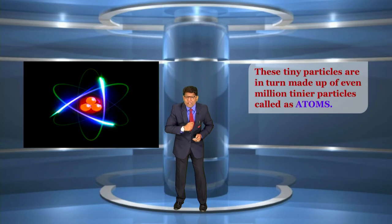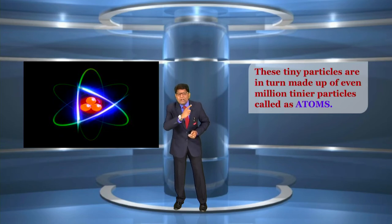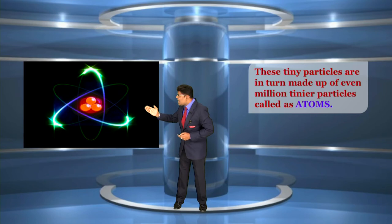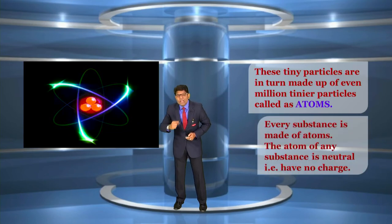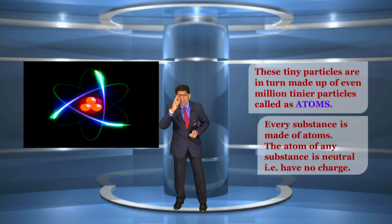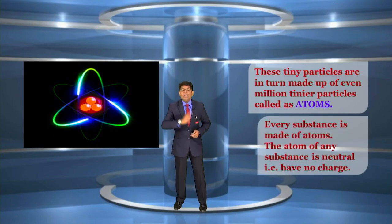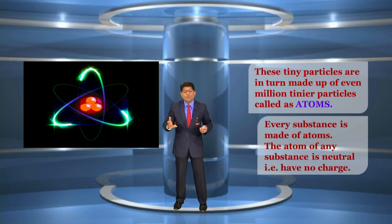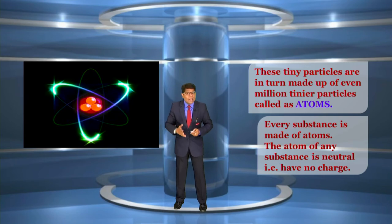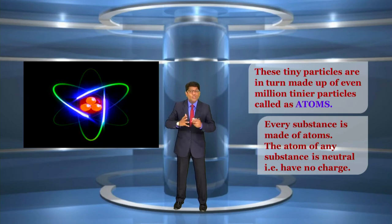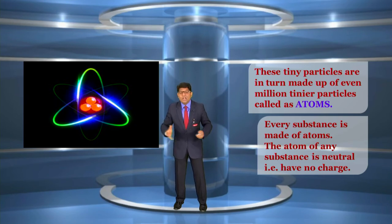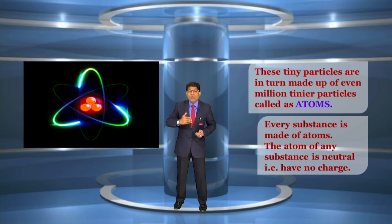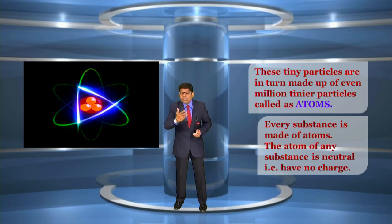These dust particles are in turn made up of even millions of tiny particles called atoms. Every substance, every matter, is made up of atoms. The atom of any substance is neutral — neutral means it does not carry any charge. There is no positive charge, no negative charge — it is neutral.